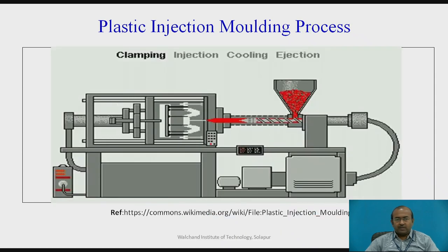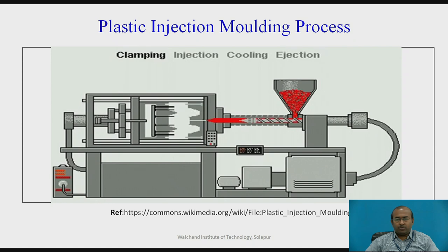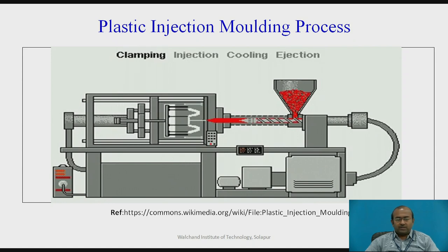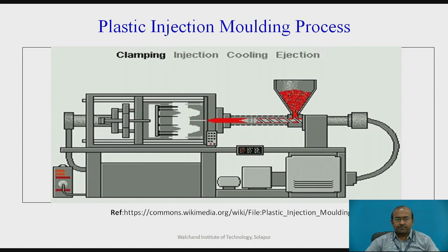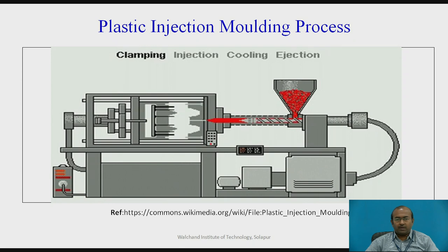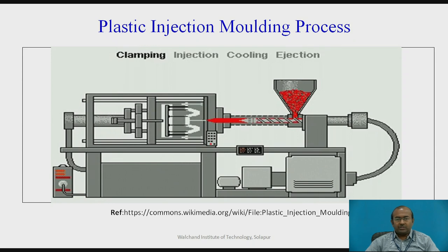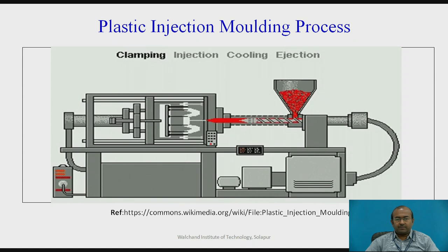Now let us see the plastic injection molding process. The process is divided into four parts, which is animated here: clamping, injection, cooling, and ejection.